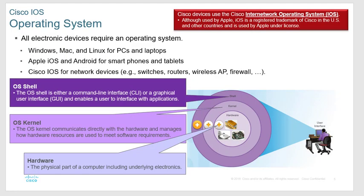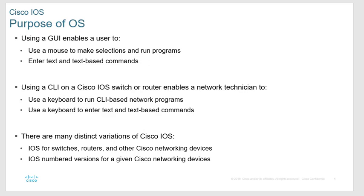Alright, IOS boot camp. Cisco's operating system is called the IOS, and it's actually registered to Cisco — Apple uses it under a license. The IOS consists of the shell and the kernel. The shell is either the command line interface or the graphical user interface that enables the user to interface with the device, and the kernel is what actually works directly with the hardware and manages hardware resources. The purpose of the OS is to provide a GUI or a CLI, which is what the CCNA is all about.